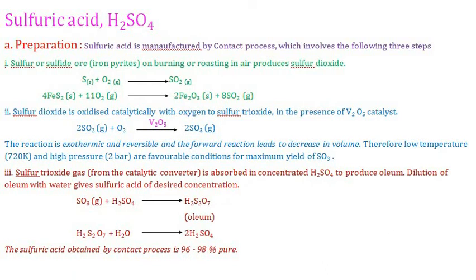Sulfuric acid is also called the 'king of chemicals' because it is used in the preparation of a large number of chemicals. Sulfuric acid is manufactured by the contact process, which involves three steps.